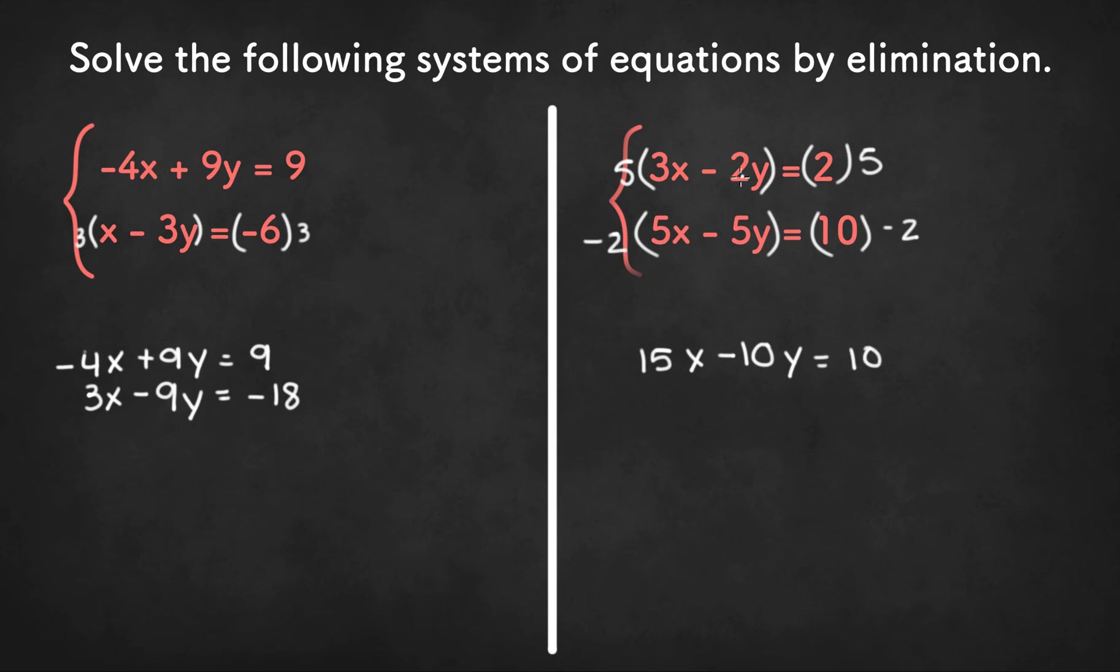And in the bottom equation we'll get negative 2 times 5x or 10x, negative 2 times negative 5y or positive 10y equals 10 times negative 2 or negative 20. And now we can add the two equations together since the coefficients are opposite.